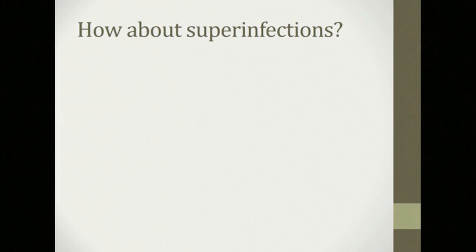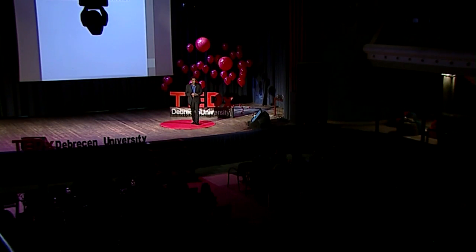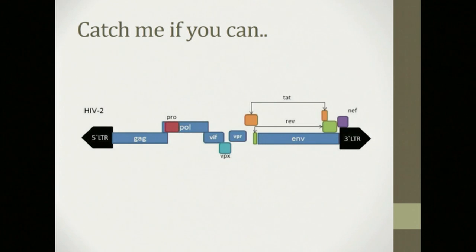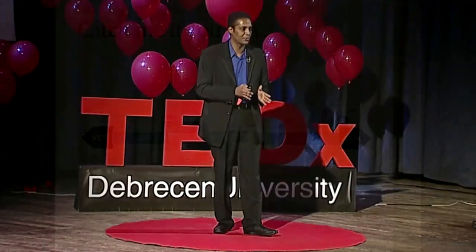Moving on, I asked: what would happen if we did a super infection — infecting cells first with HIV-2 and then HIV-1? To our surprise, this decreased the infectivity of HIV-1 to almost complete obliteration. Things were getting serious. I was ecstatic — I even did the victory dance in the lab. We started playing catch-up with the virus, trying to find what it is in HIV-2 that causes this decrease in HIV-1 infectivity. The question was simple; the answer was not. We dissected each element of the virus, and a couple of months ago we were quite positive we had identified the responsible factor.